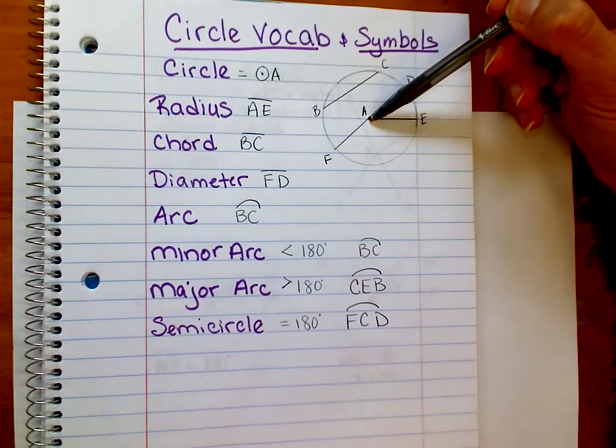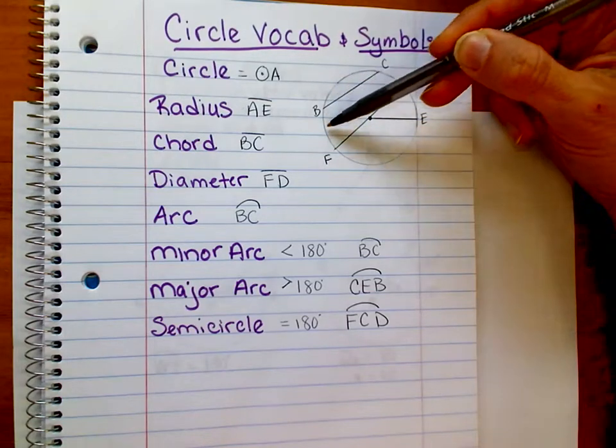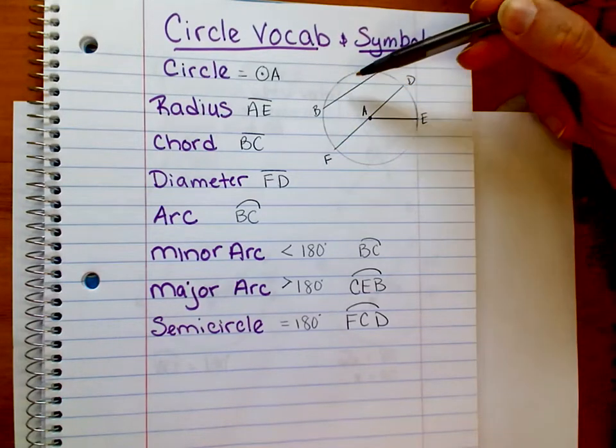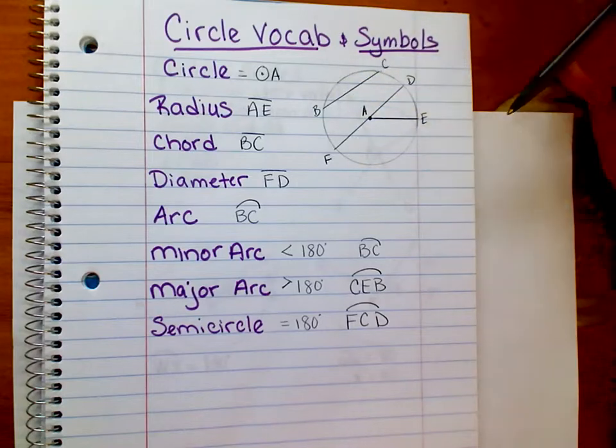You have a point which is called the center, and all the points that are the same distance from that center make up the circle.